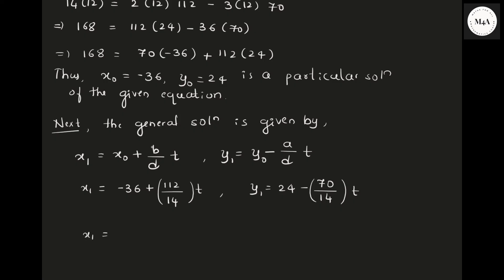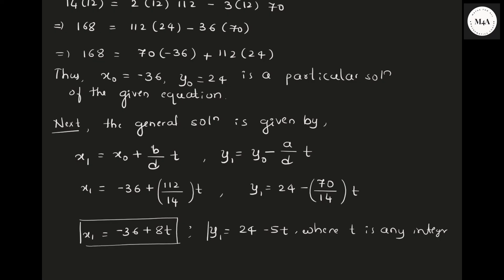When you simplify: x1 equals minus 36 plus 8t, and y1 equals 24 minus 5t. These are the general solution of the given equation. For any integer t, you can put in values and find the possible solutions of the given Diophantine equation.